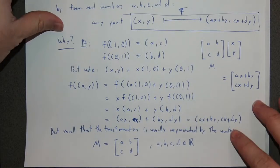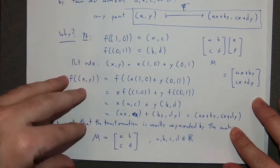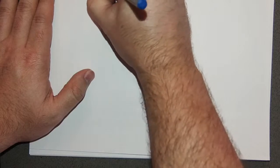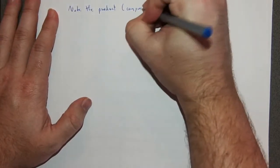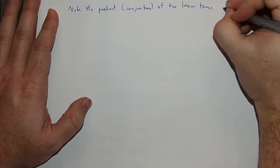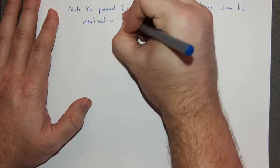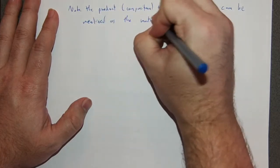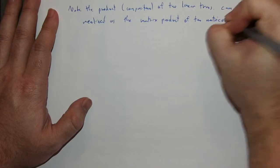What's nice is that the composition of two linear transformations can be realized as the matrix product of two matrices. The product of matrices corresponds to the composition of the corresponding linear transformations.